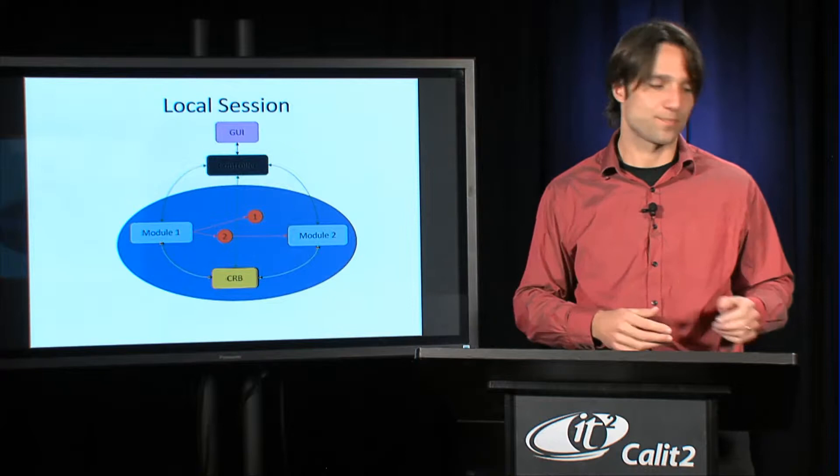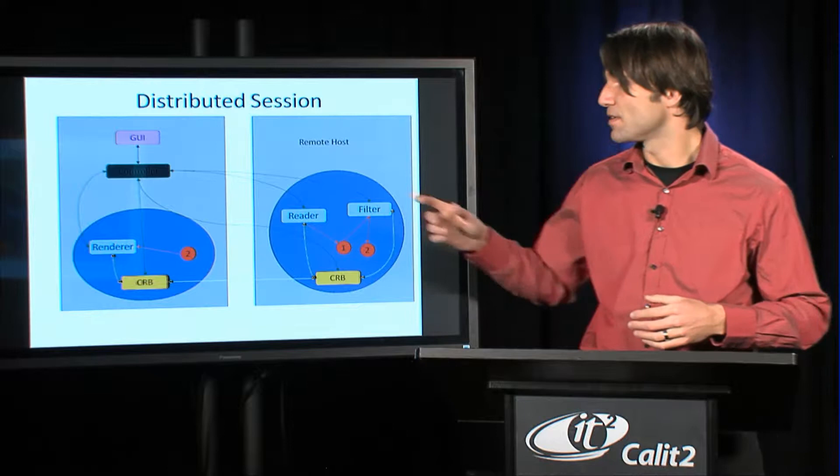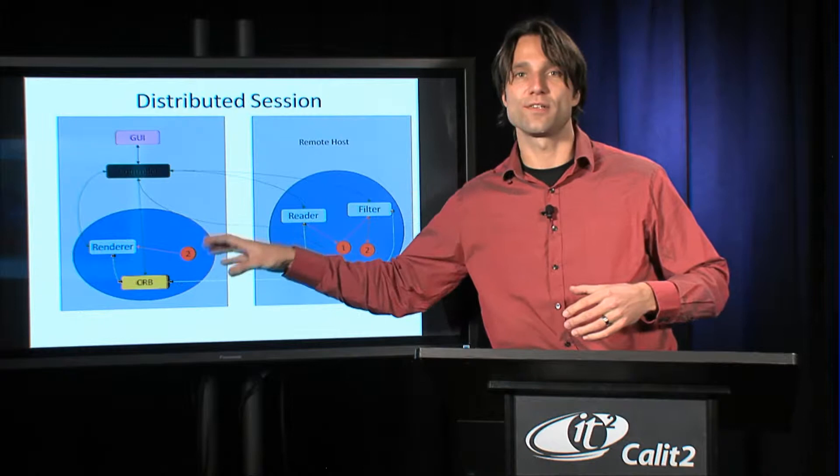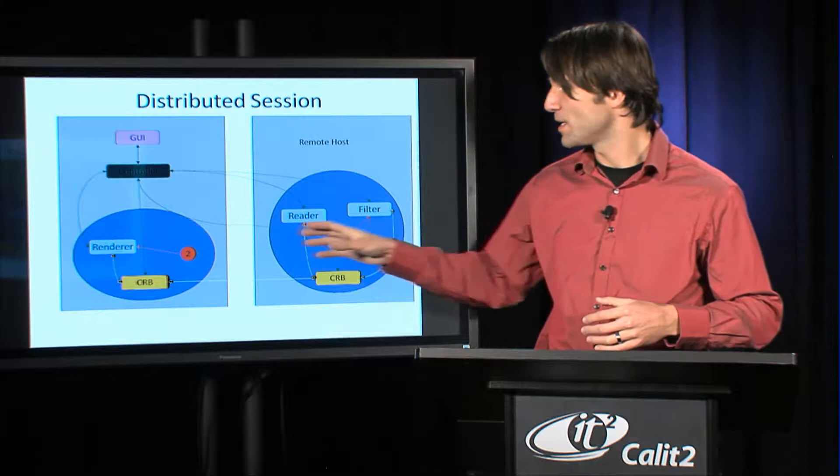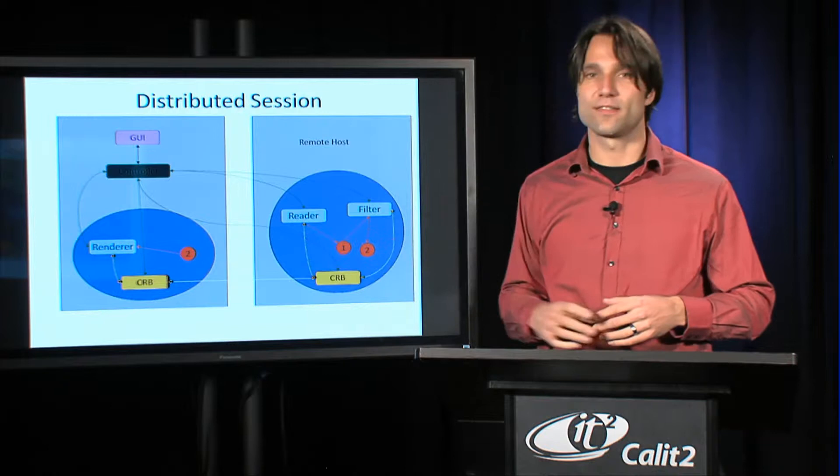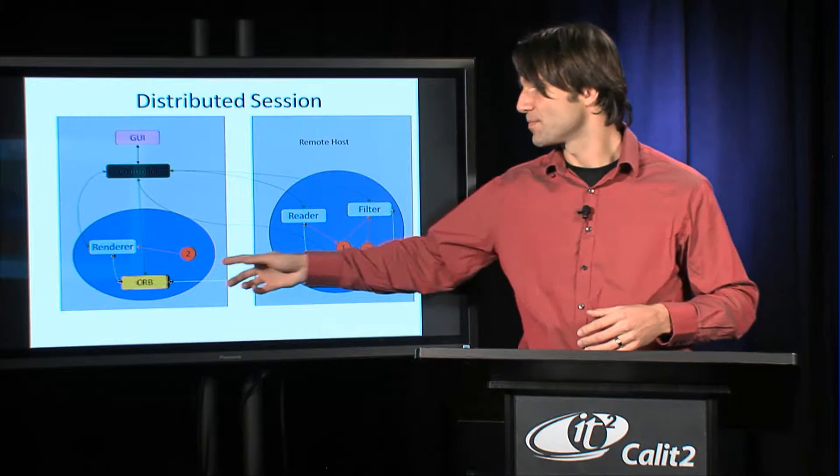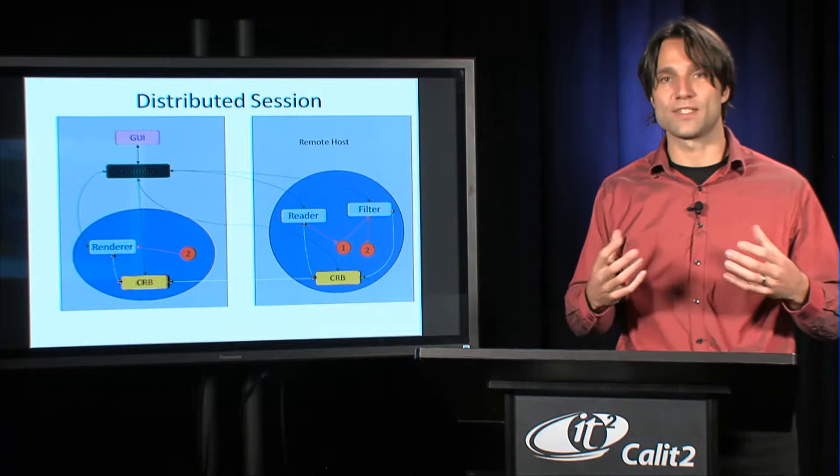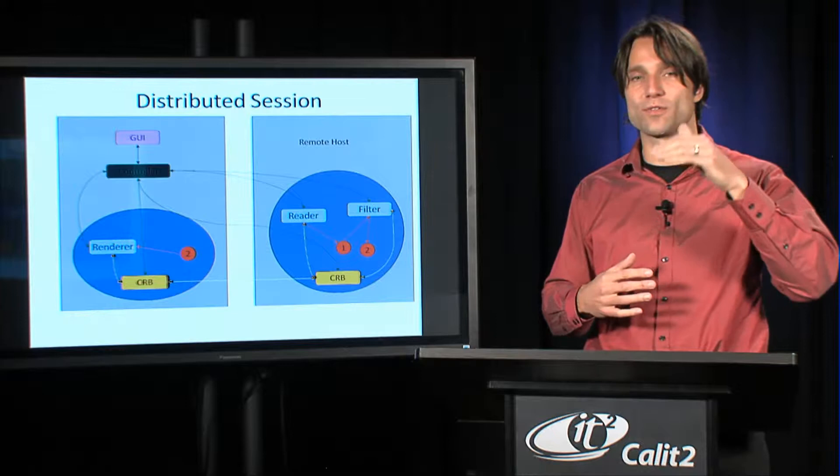In a distributed session we have also one GUI and one controller, but we have a pool of modules on the local system and a pool of modules on the remote system. You can see that here, we have a renderer module here and a reader and a filter module there. Since it's a distributed system, we have two request brokers, these yellow units here. These talk to each other over the network. That's how the data is being exchanged between these systems in the data flow diagram.